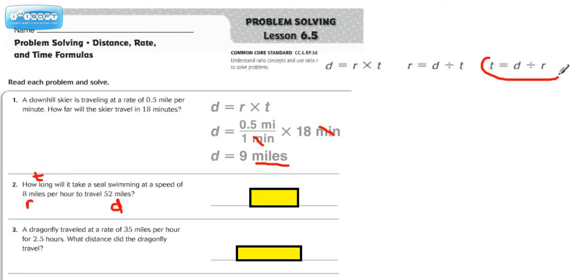So that means we can go ahead and use this formula right here to do number two. Time equals distance, which is 52 miles, and it's a good idea to put the units in, divided by, and the rate here is 8 miles per hour.